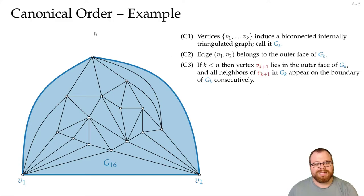Now we want to determine the canonical order backwards. So first we want to pick the very last vertex, then the second last, and so on, until we get to vertex v3.